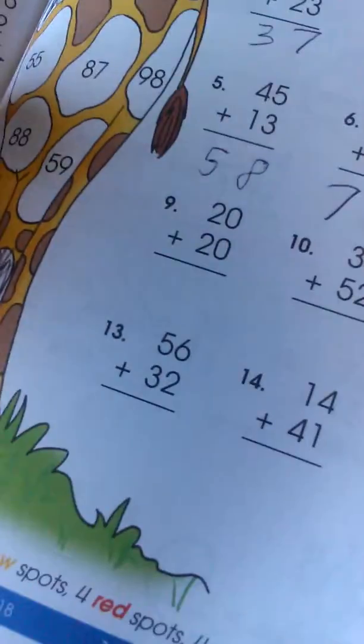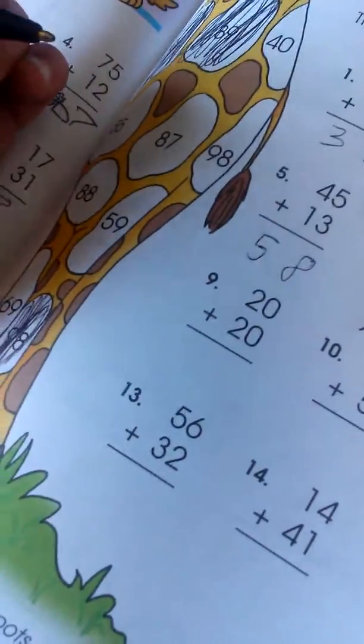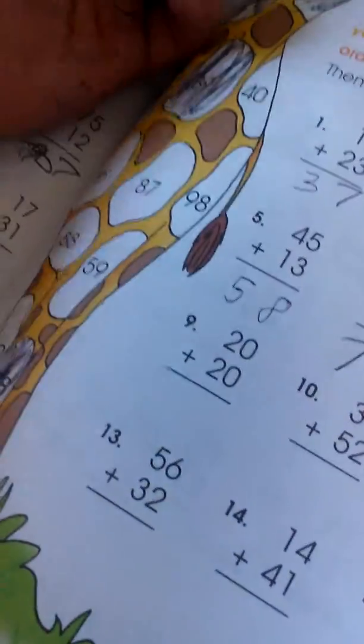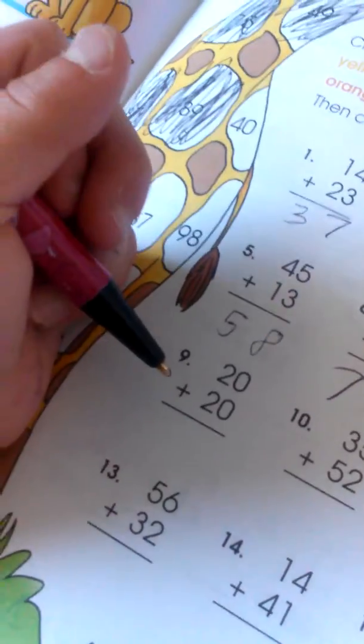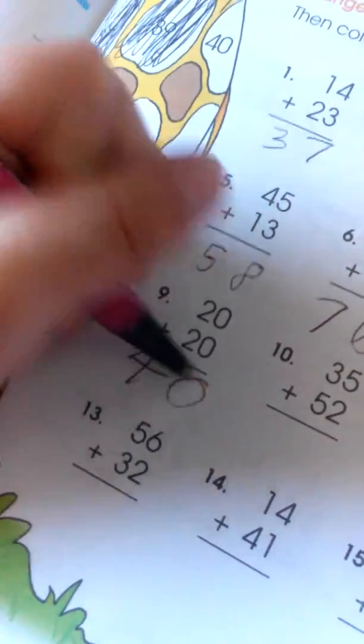So 56 plus 32. You skipped the 20. Oh, I forgot. 20 plus 20. Keep going. What is 20 plus 20? I know that. That is 40. Put it. I've learned that one before.